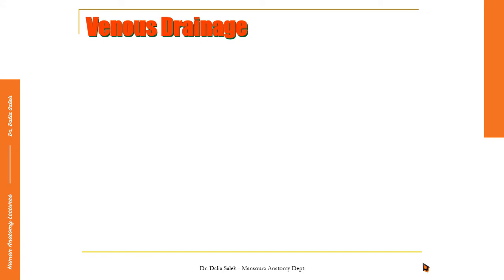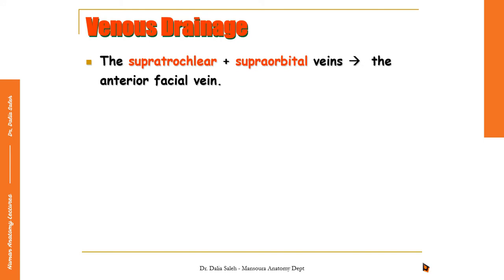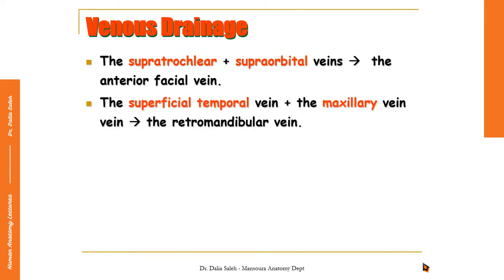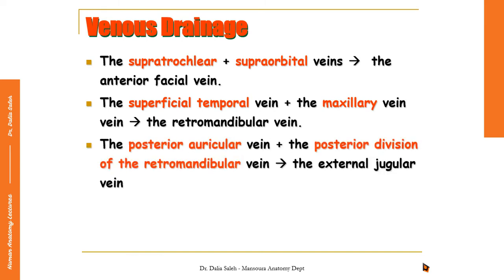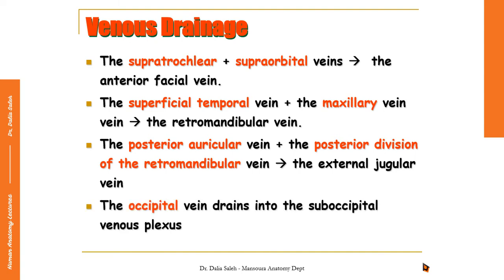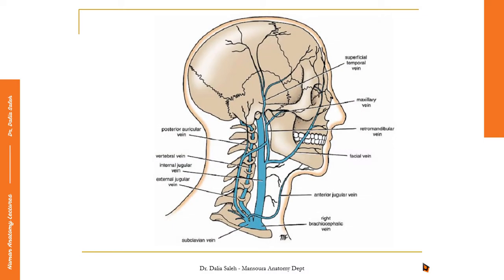For the venous drainage of both the scalp and face, the pattern is as follows. The supratrochlear and the supraorbital veins unite together to form the anterior facial vein. The superficial temporal vein together with the maxillary vein unite to form the retromandibular vein, also called the posterior facial vein. The retromandibular vein, which lies behind the ramus of the mandible, splits into anterior and posterior divisions. The supratrochlear and supraorbital veins unite at the medial angle of the eye to form the anterior facial vein.